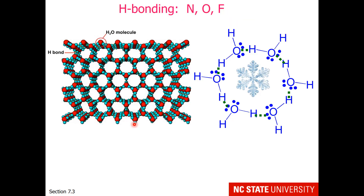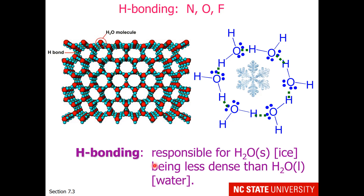Hydrogen bonding is particularly important in the water molecule. Here is a look at the crystal structure of ice, which is made up of many water molecules, represented by the red sphere for oxygen and the two blue spheres for hydrogen. You notice that the crystal structure seems to have hexagons in it. This picture shows that hexagonal hydrogen bonding scheme, and that's why snowflakes are six-pointed. Hydrogen bonding is also responsible for ice floating on top of water because it's less dense given the many empty spaces.